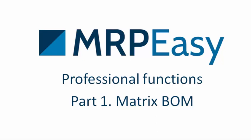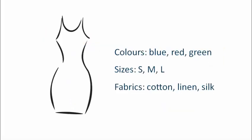With the Matrix POM functionality, it is possible to enter one article and change its parameters, for example color, size or material. Here's a demonstration of how the production process of a dress that comes in 3 different colors, 3 different sizes and 3 different fabrics would be handled with MRPEZ.